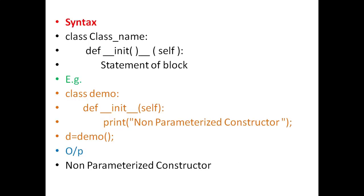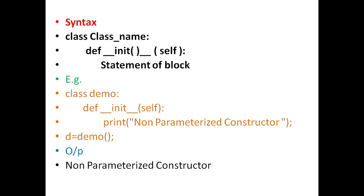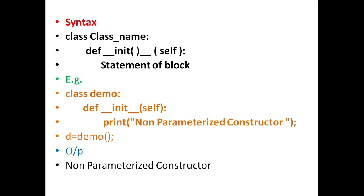The general syntax for defining a non-parameterized constructor is: the class keyword, followed by the class name, then def with the init method and parameter self, and a statement block. For example, class demo is defined with a non-parameterized constructor and it will print 'non-parameterized constructor'. When we create an object of demo, the output will be 'non-parameterized constructor'.